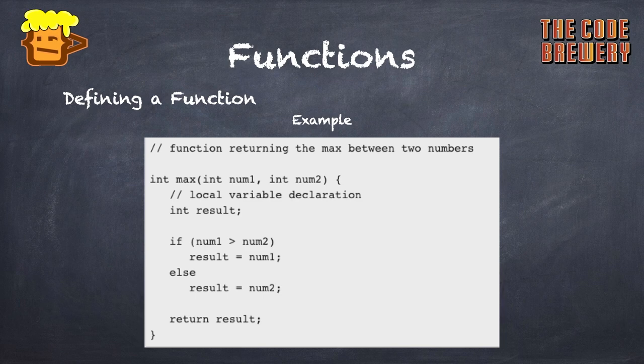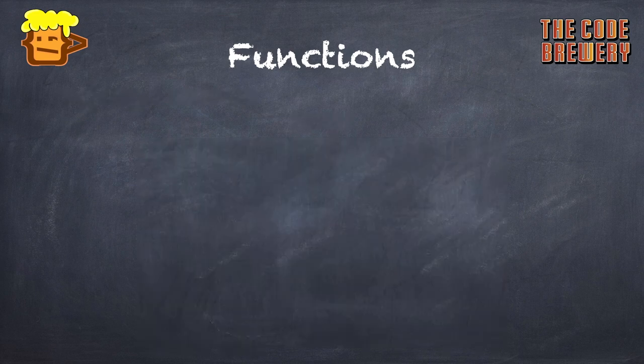We declare some local variable int result. If the number one is greater than number two, then result will be number one, or else it will be number two, as we have seen in the if-else statement in decision-making statements. And we return the result which is of int type.